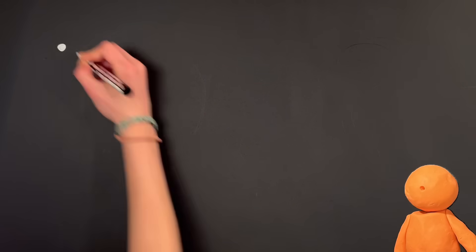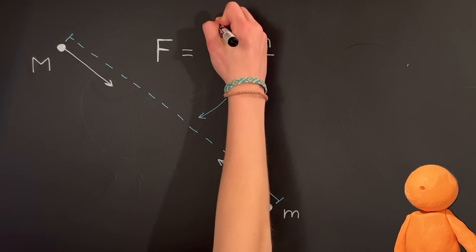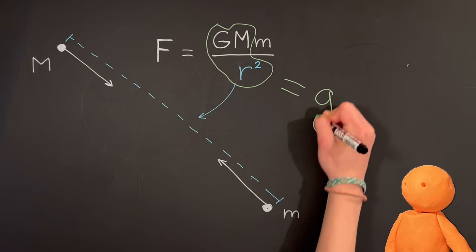By the way, the force of gravity between two point masses is given by this formula where the m's are the respective masses, r is the distance between the points, and big G is a particular constant. And when we say 1g gravity, we really mean that the part of this formula without the little m is equal to what it is on the surface of the Earth.